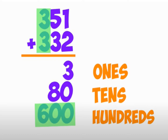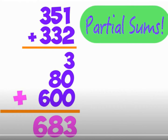Now the tens. Look at the first addend — we have 50. And the second addend, we have 30. So 50 plus 30 equals 80. Now the ones place: the first addend has 1 and the second addend has 2. So 1 plus 2 equals 3. Now add all the partial sums — ones, tens, and hundreds: 600 plus 80 plus 3 equals 683.